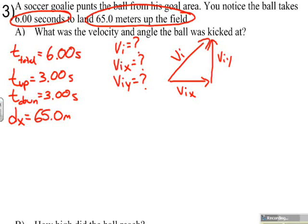At this point, I think we'll be able to figure out what our initial velocity in the x direction is, because the initial velocity in the x direction is going to be equal to the distance it travels in the x direction divided by the total amount of time it's traveling in the x direction.